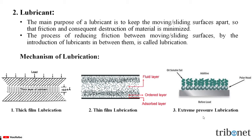The last and third mechanism is extreme pressure lubrication. When the moving surfaces are under very high pressure and speed, a high local temperature is attained under such conditions. Liquid lubrication fails to stick and may decompose and even vaporize. To meet these extreme pressure conditions, special additives are added to mineral oils and these are called extreme pressure additives, and this type of lubrication is called extreme pressure lubrication.